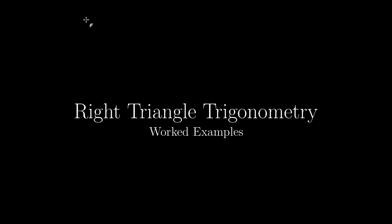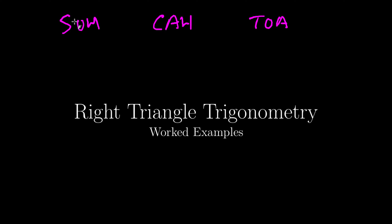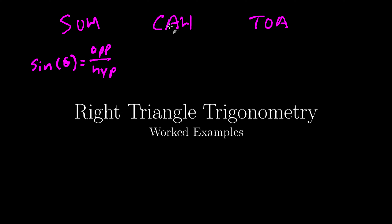As a reminder, we have this mnemonic device SOH, which stood for the sine of some angle in a right triangle is equal to the opposite leg divided by the hypotenuse. CAH — C stands for cosine — so cosine of a given angle is equal to the adjacent leg over H for hypotenuse.